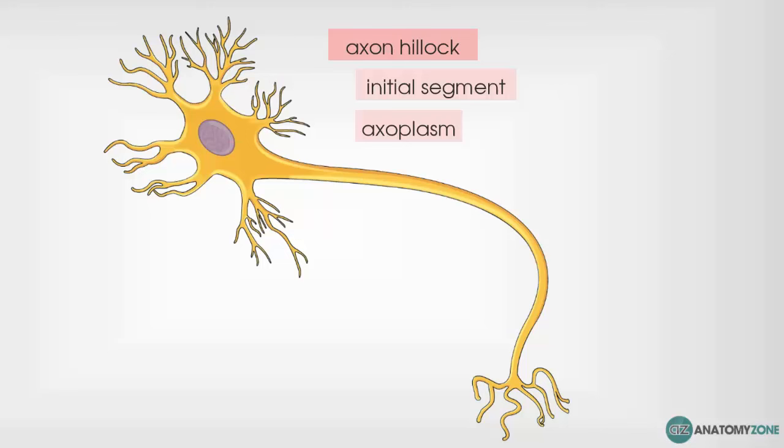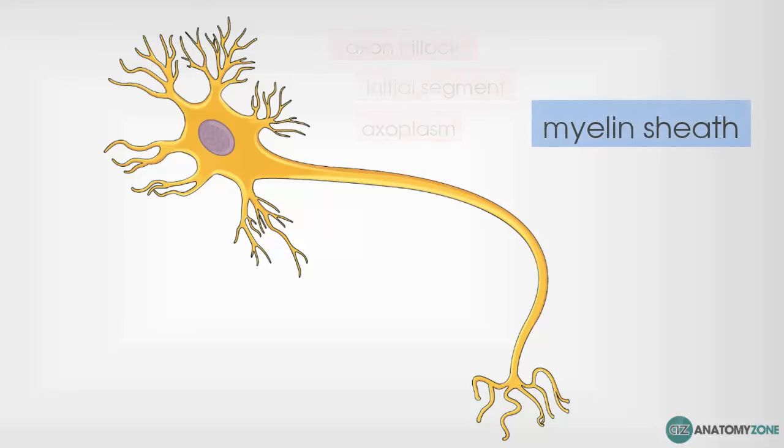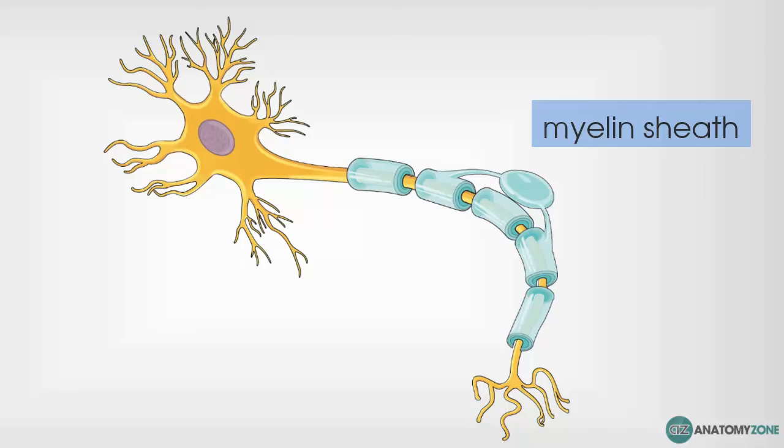The next structure we'll look at is known as the myelin sheath. This myelin sheath essentially acts as insulation for the nerve. It prevents the electrical impulse that's generated from escaping from the neuron and allows the impulse to flow more effectively.